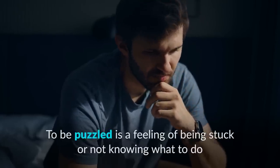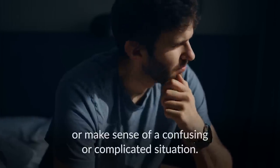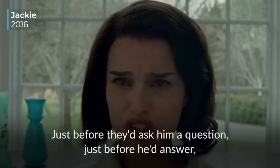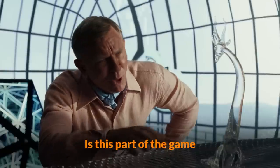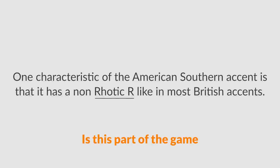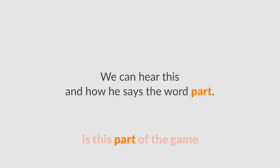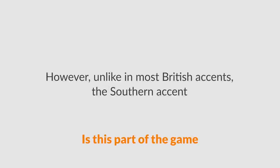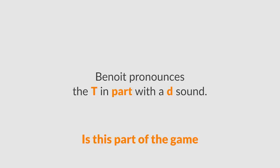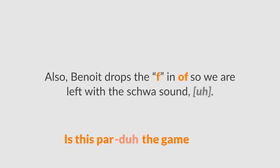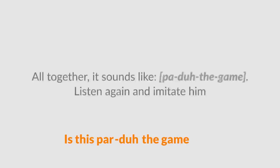To be puzzled is a feeling of being stuck or not knowing what to do, and often involves trying to figure out or make sense of a confusing or complicated situation. Benoit Blanc has a southern accent, although different from Helen's. One characteristic of the American southern accent is that it has a non-rhotic R, like in most British accents. We can hear this in how he says the word 'part.' With standard American I would say 'part,' but Benoit says 'part of the game.' Also, Benoit drops the F in 'of,' so we hear the schwa: 'part of the game.'